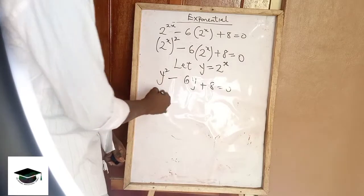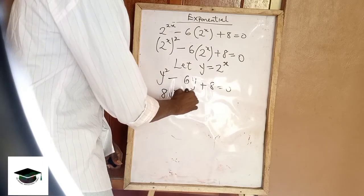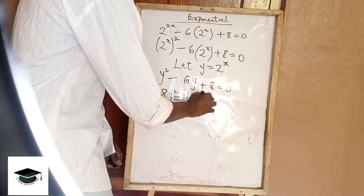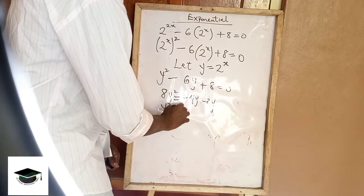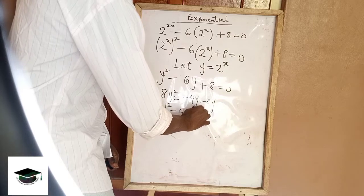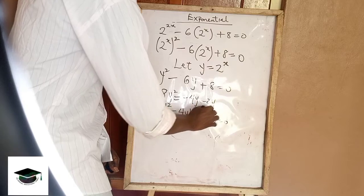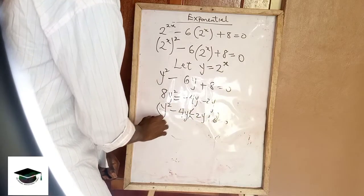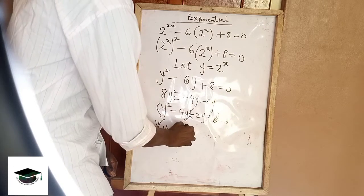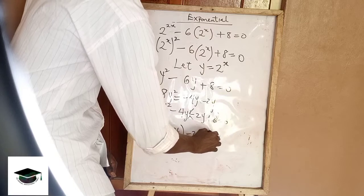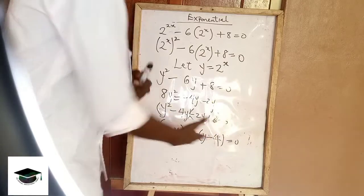And then, if I'm going to use factorization, then we just do it simple and short. So the factors here, that's going to be minus 4y minus 2y, right? So that's going to be y squared minus 4y minus 2y plus 8 equals to 0. So you group it to 2. So y is common here, y minus 4. What's common here? Minus 2. So that's y minus 4.